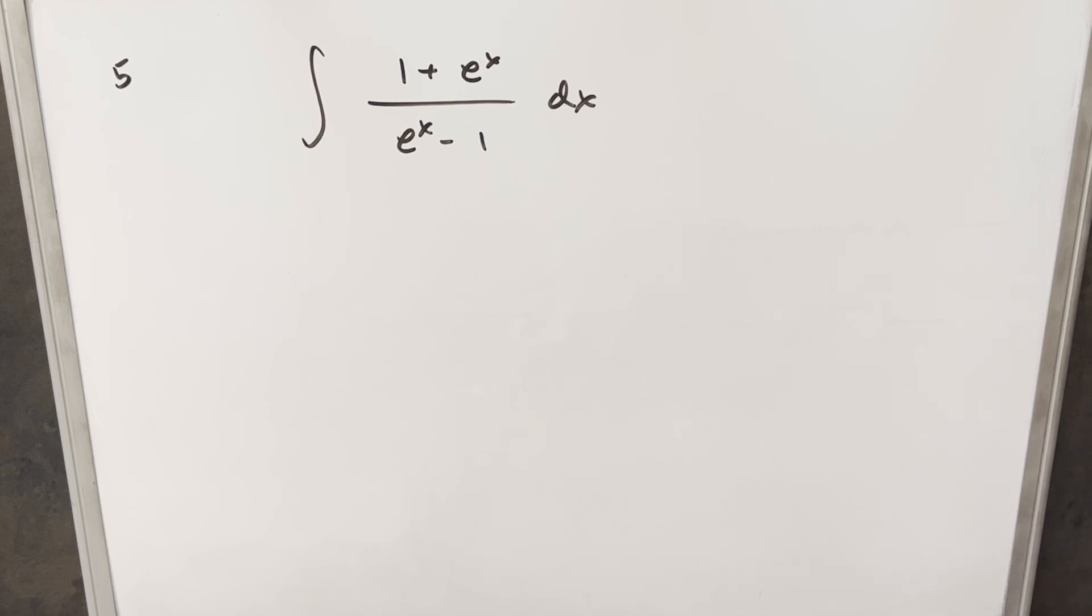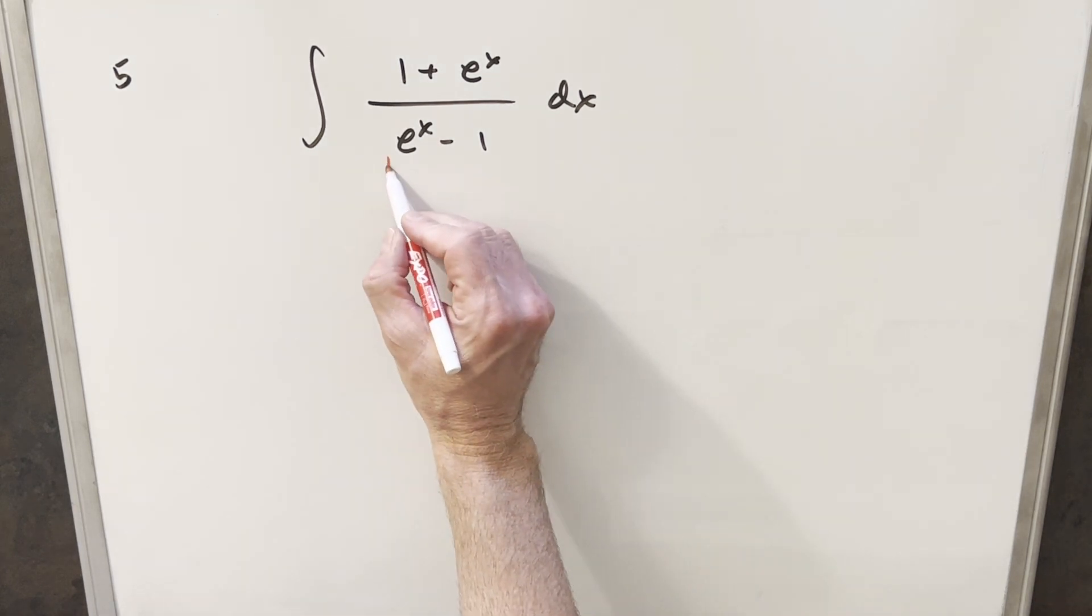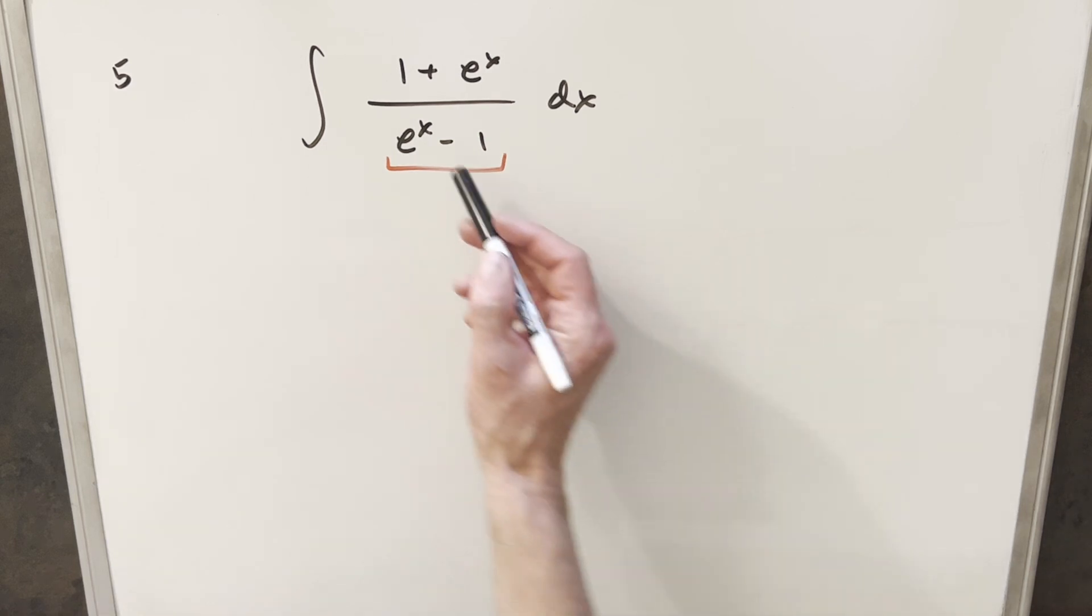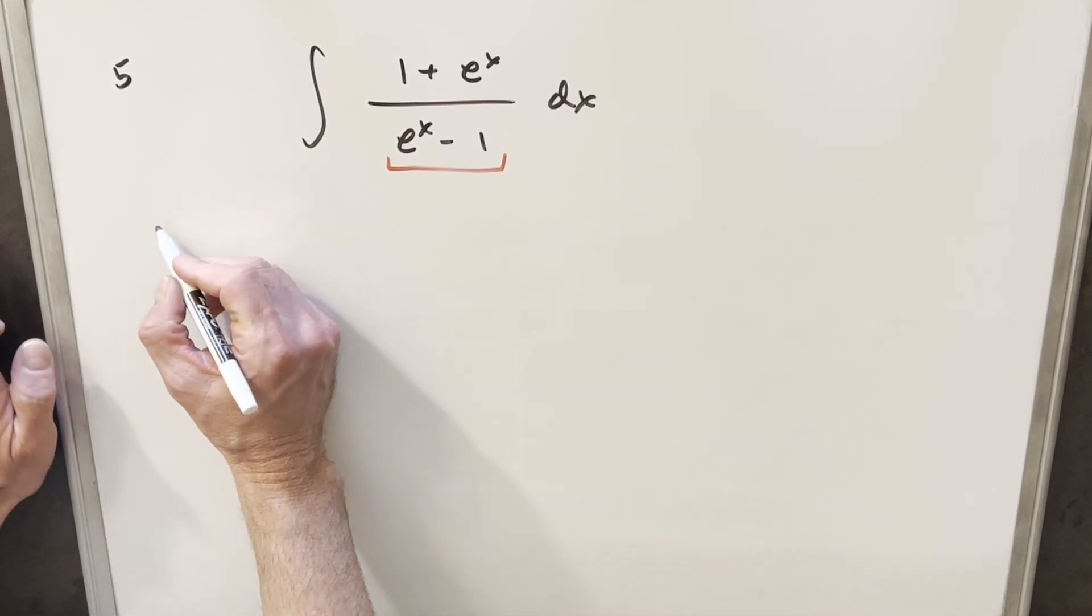Now I definitely want to do a u substitution on this, but if you just do it right away and we just call this our u, we get back in e to the x, but we don't get back this 1. So I think what I want to do instead is let's put this on the plus sign and split it into two integrals.